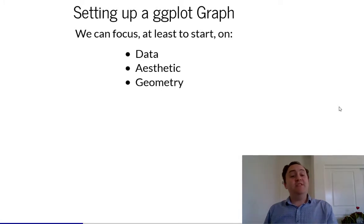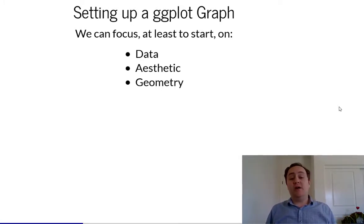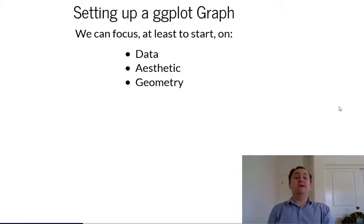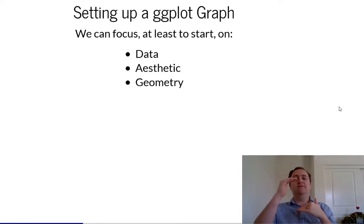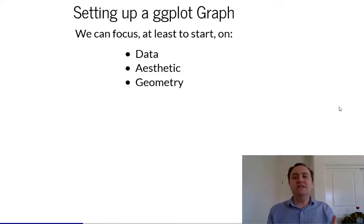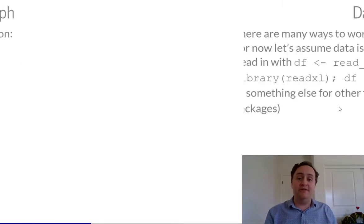The things we definitely need to specify when setting up a ggplot graph are our data, our aesthetic, and our geometry. Everything else — all the different layers of the grammar of graphics — they're in there and you have to have them, but they have good defaults so generally we don't have to mess with them all the time.